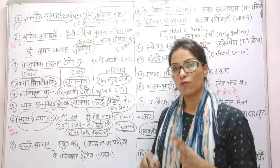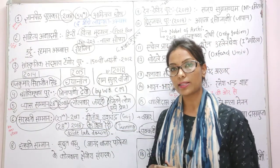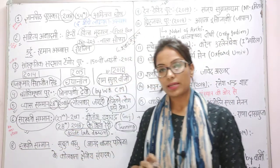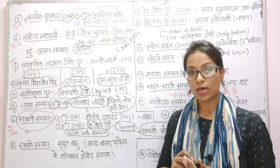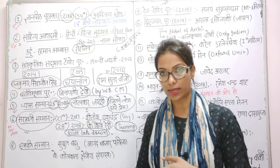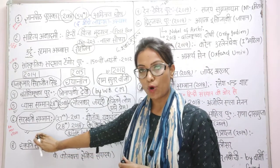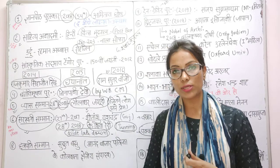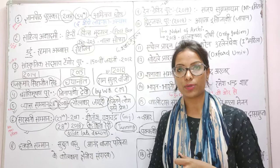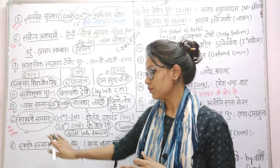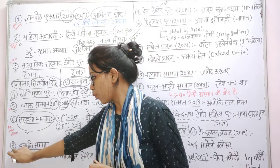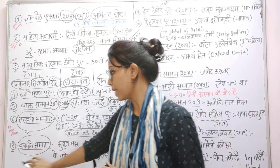The 27th Vyas Samman was given to Sitanshu Yashaschandra, and it was given for Gujarati language. Remember that the 27th Vyas Samman went to Sitanshu Yashaschandra for Gujarati. The first Vyas Samman went to Gishankar Kuruv — that language is also important to remember.